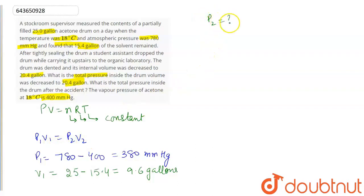P2 we have to find out. V2 we have given. We said that after the dent, the drum's capacity is 20.4, but the liquid is 15.4, so the available gas capacity is 5 gallons.